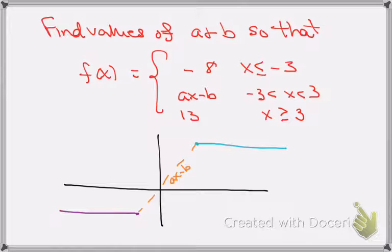if we're to the left of minus 3, then the functional value is stuck at minus 8, which is down here, y equals minus 8.